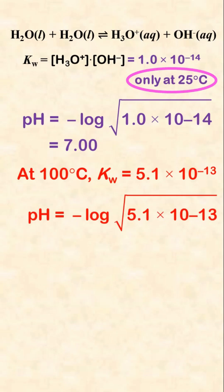Pure water at that temperature is still neutral, but now that neutral pH is the negative log of the square root of 5.1 times 10 to the negative 13th, which is 6.15.